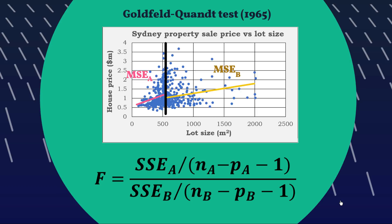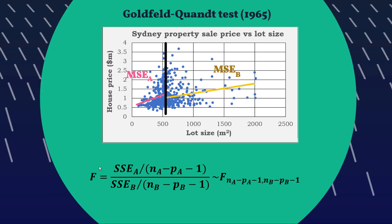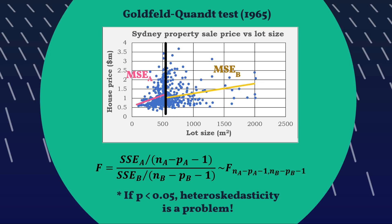Just be aware that when I use MSE or SSE in this video, the E stands for error, not explained — it's easy to confuse the two conventions. So SSE is the sum of squared errors of regression A divided by the degrees of freedom of regression A, and similarly for regression B. That gives you the mean squared error on top and bottom, which you could almost calculate by hand given SSE from your regression output.